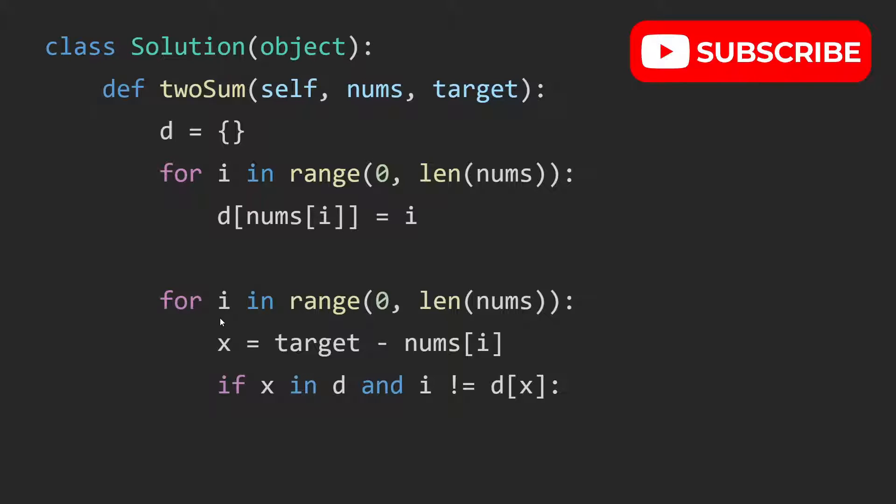For the second step, we traverse through the nums array again and i is the index that we currently are at in the nums array. We calculate x. So we check is x inside the dictionary. And if it is, we want to get the index of x.